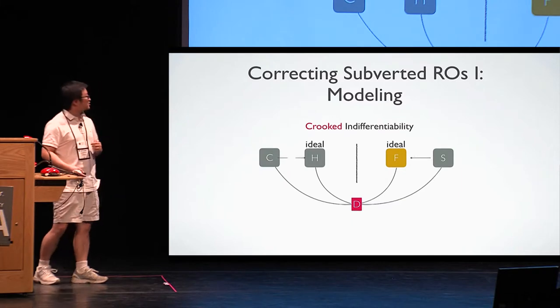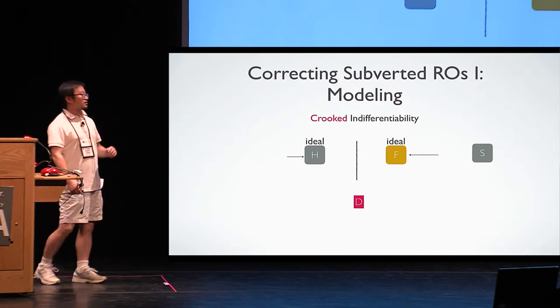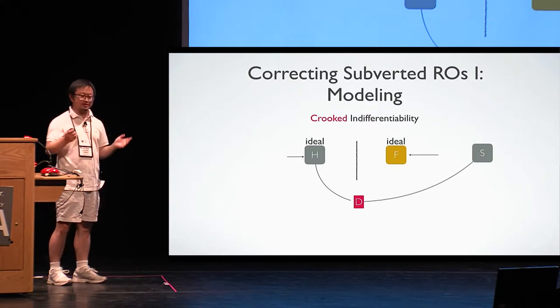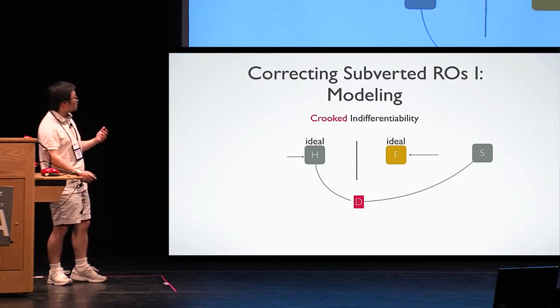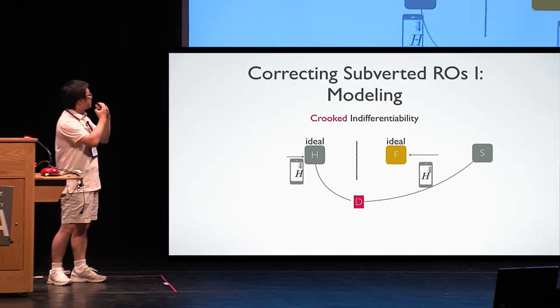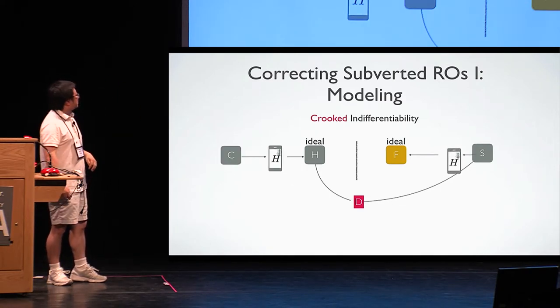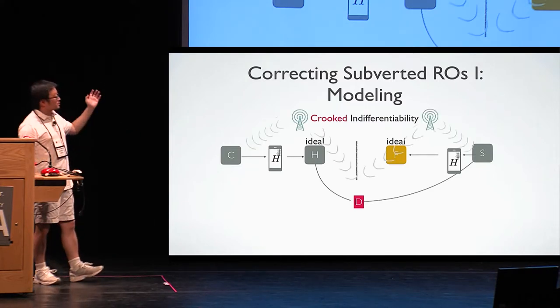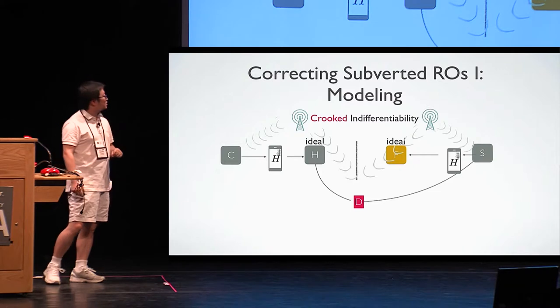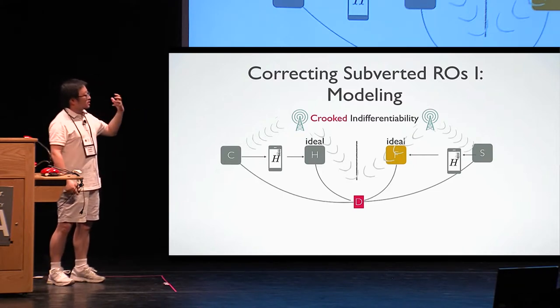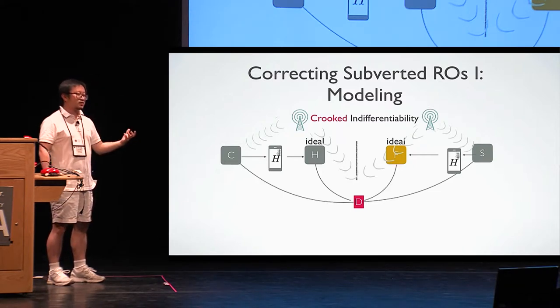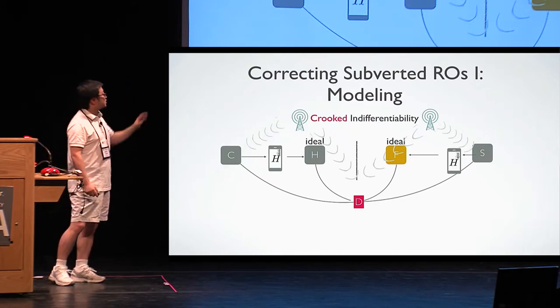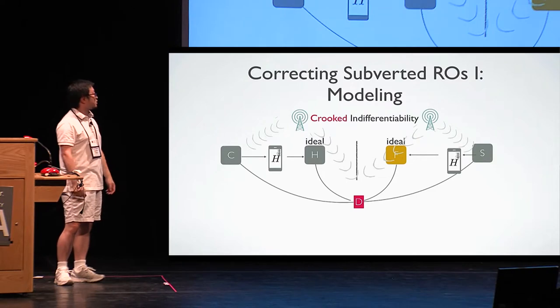So we call the new notion crooked indifferentiability. So what's the procedure? So first, the distinguisher queries the original ideal object and tries to do all kinds of preprocessing. Prepare the backdoor, prepare the malicious implementation. Then he just disperses the malicious implementation and the construction comes. The construction is going to sample some public randomness and reveal the public randomness to the distinguisher.